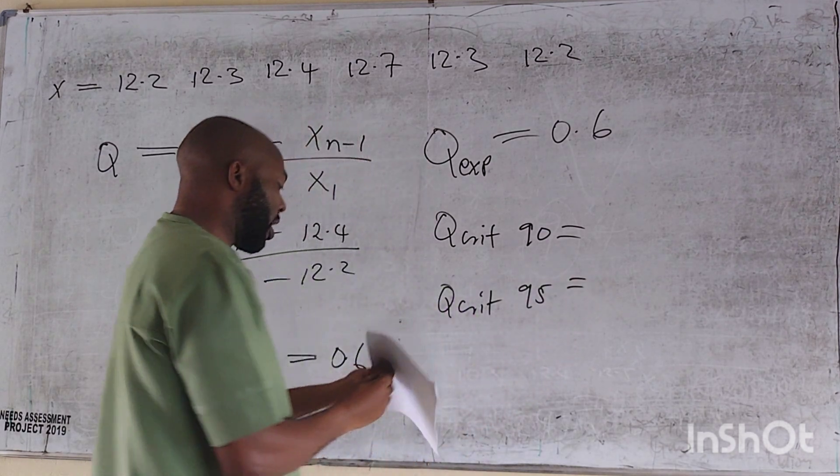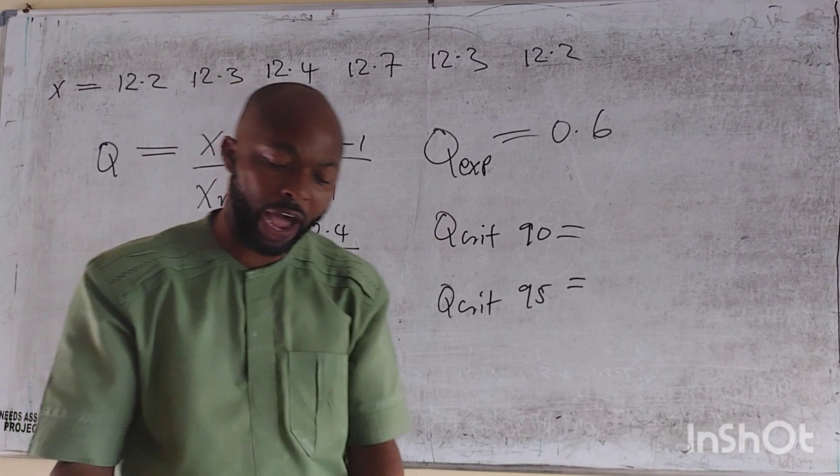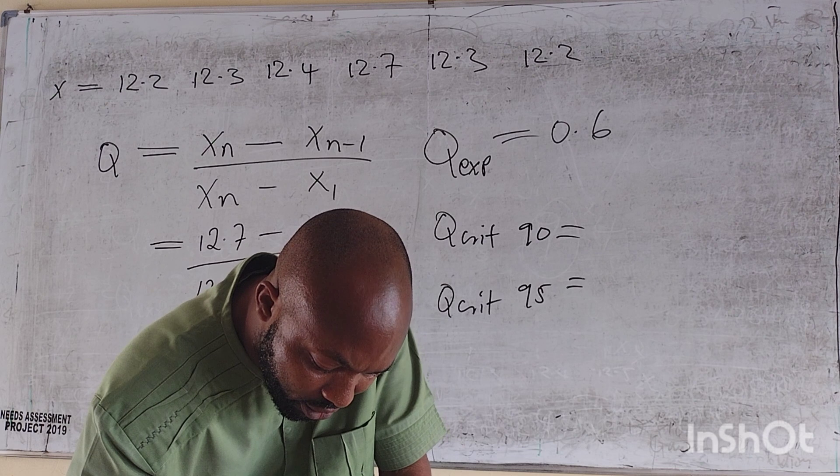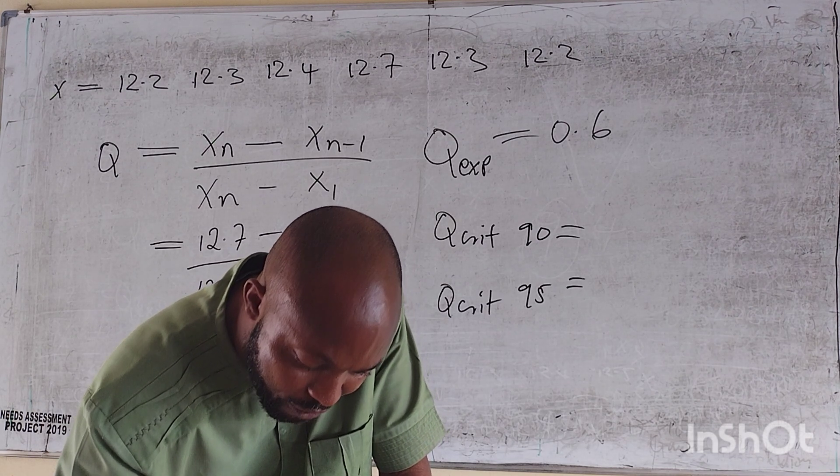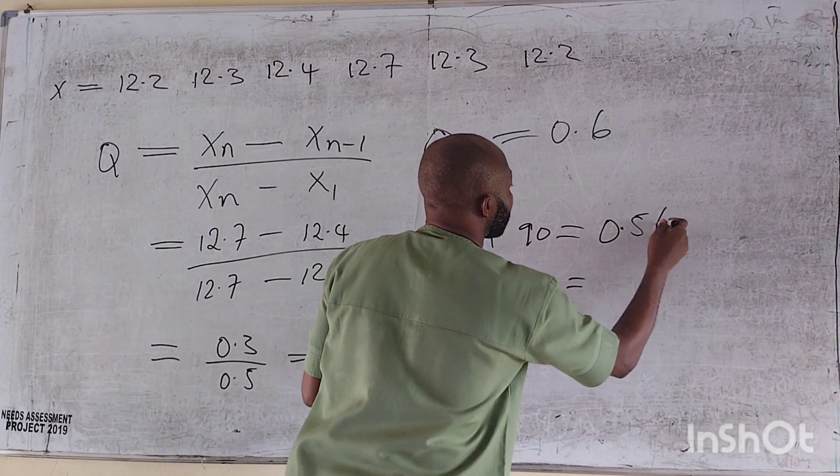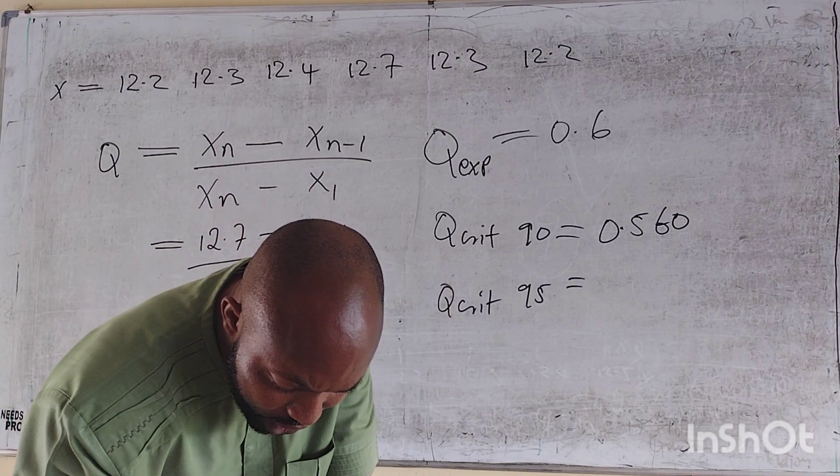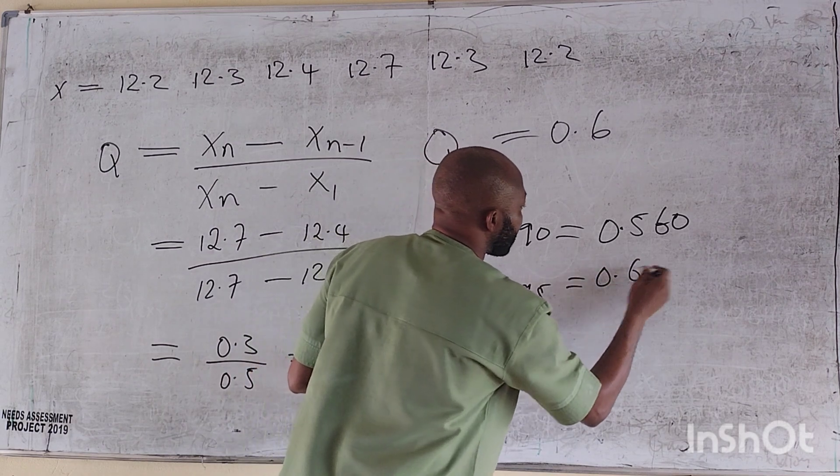Q-critical at 90 and Q-critical at 95. I'll get them all out. So I have 1, 2, 3, 4, 5, 6, six variables. I go to my Q-table. So 6, I have 6 here. At 90, it's 0.560. At 95, it's 0.625.